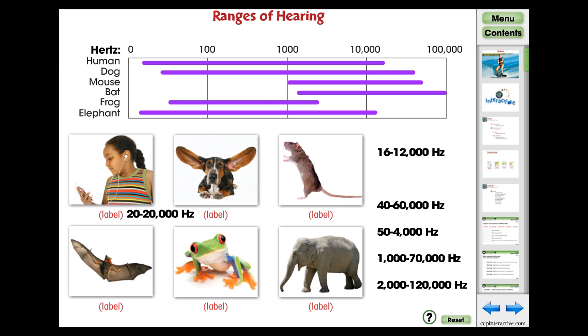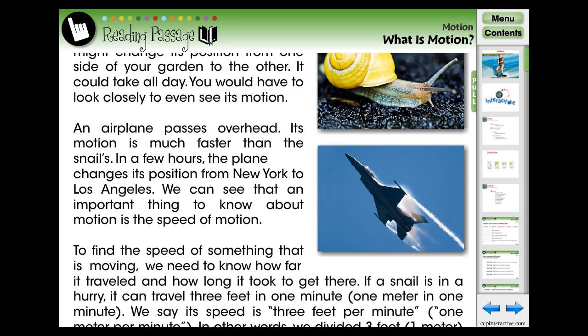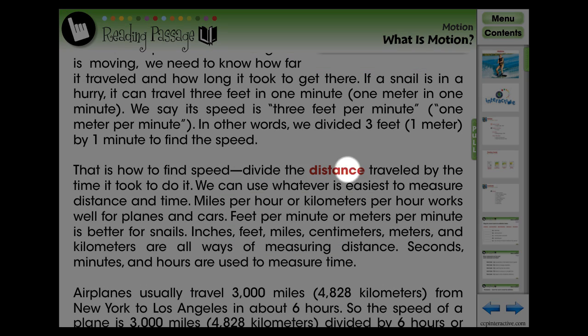Each of the seven chapters features its own additional comprehensive interactive activity directly related to the reading passage. Our interactive lesson teaches students how to measure and calculate motion from using the formula for calculating speed to graphing motion.